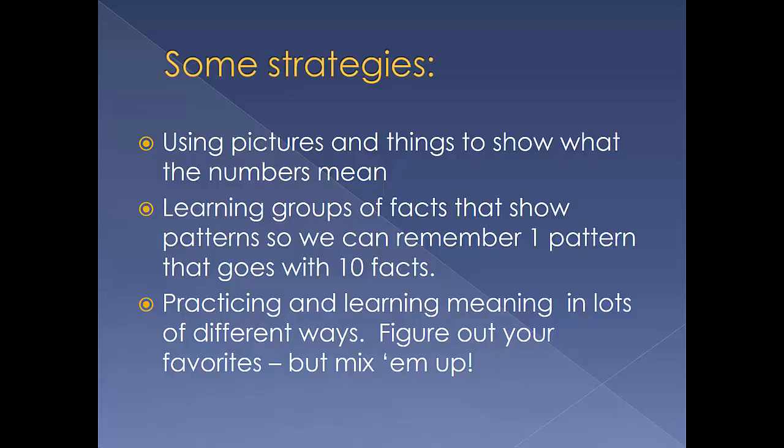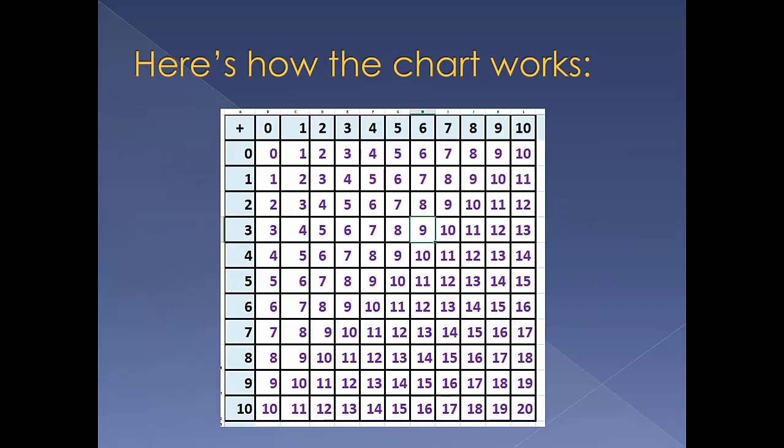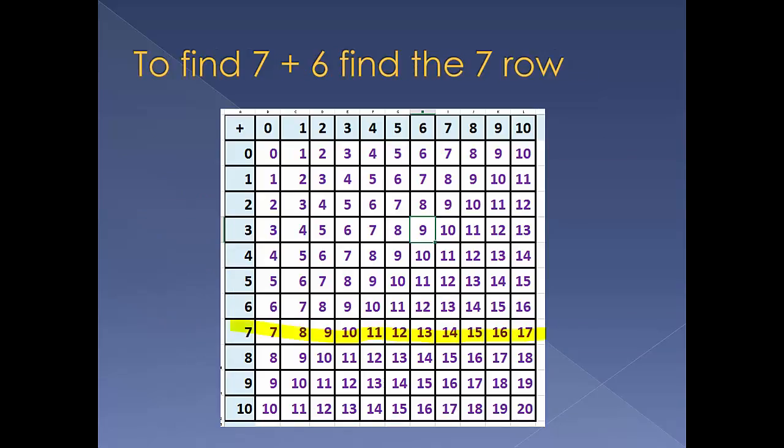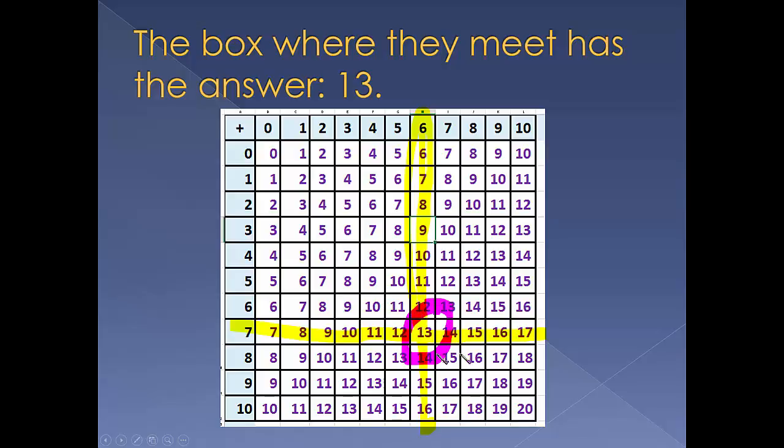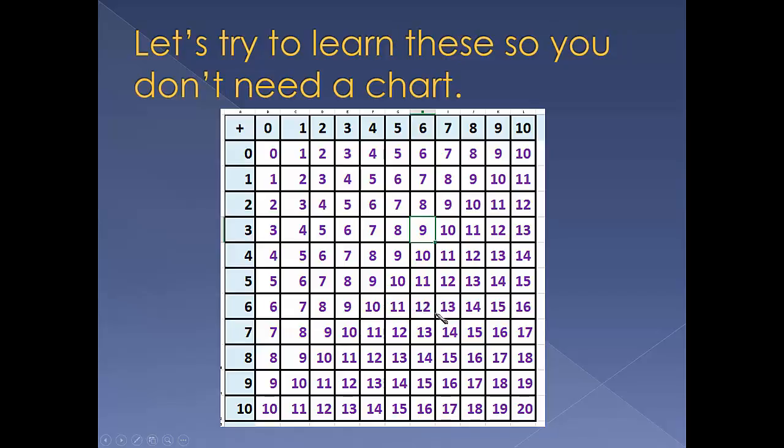Here's how the chart works. To find seven plus six, find the seven row and the six column. The box where they meet has the answer: 13. You could have also found the six row and the seven column. Order doesn't matter in adding. But let's try to learn these so you don't need a chart or to count.